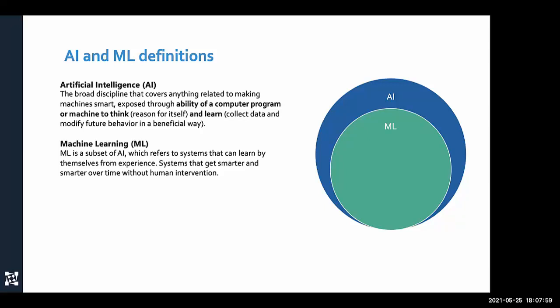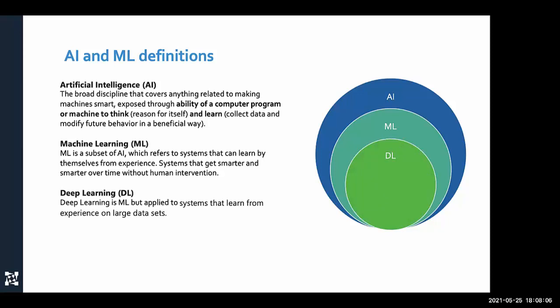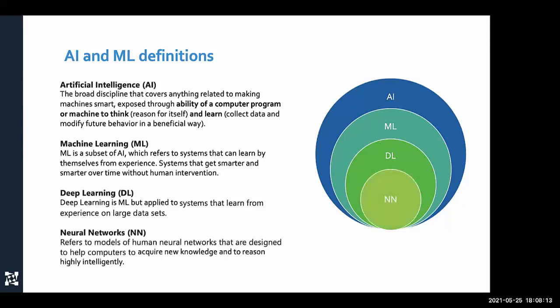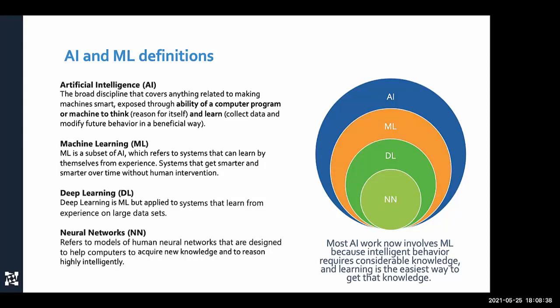The idea is that software becomes smarter and changes its behavior based on what it observes. Deep learning is a subset of machine learning where software learns on huge amounts of data — hundreds of terabytes — and neural networks are a way to represent that data through simulation of human neural networks, allowing highly intelligent reasoning. When we talk about AI we mostly focus on machine learning, though we work with neural networks as well.